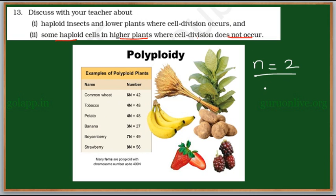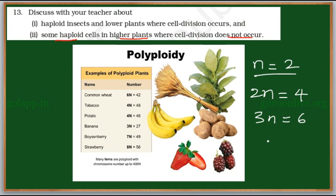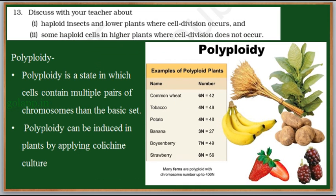Haploid is represented by n, and diploid 2n means two sets of each chromosome. If one set has 2 chromosomes, then 2n = 2×2 = 4. For triploid (3n), it is 3×2 = 6. For tetraploid (4n), it is 4×2 = 8. As the number of chromosome sets increases, we call this condition polyploidy.